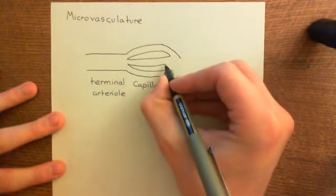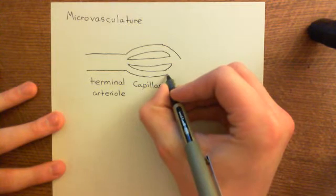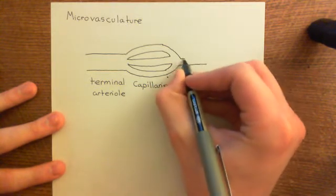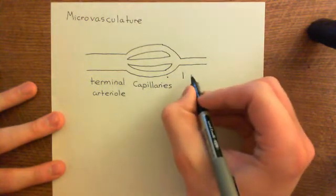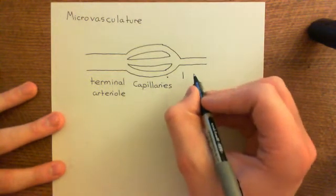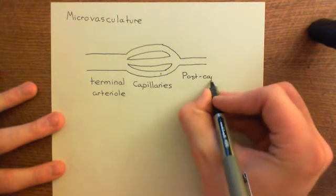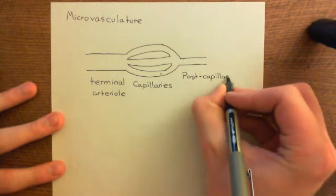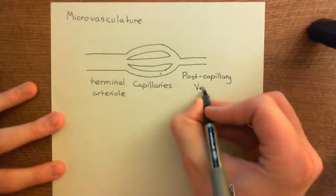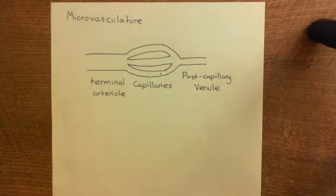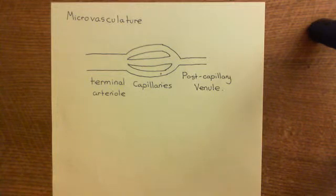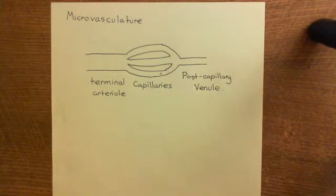Then all of these capillaries reconverge into a single blood vessel again — a venule. Specifically, this is what we would call a post-capillary venule: the venule you have just after the capillaries. These are absolutely tiny blood vessels. To emphasise exactly how small they are, let's draw cross-sections of all three — and we're doing this not just to emphasise their size, but also because it's going to be very important for understanding how the acute inflammatory response works.